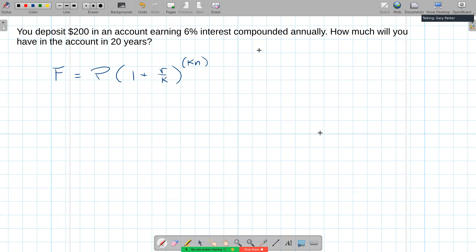The compounding period, that is our K, and that's the number of times you collect interest each year. And since we're compounding annually, K would be 1.